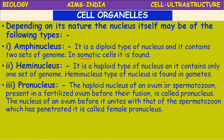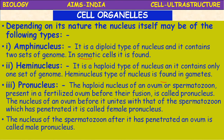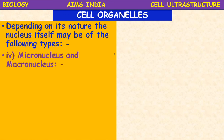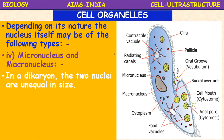Male pronucleus represents the spermatozoon, and female pronucleus represents the ovum. The zygotic nucleus is formed by the fusion of male and female pronuclei. The nucleus of the spermatozoon after it has penetrated the ovum is called the male pronucleus. Depending on its nature, the nucleus itself may also be classified as micronucleus and macronucleus.